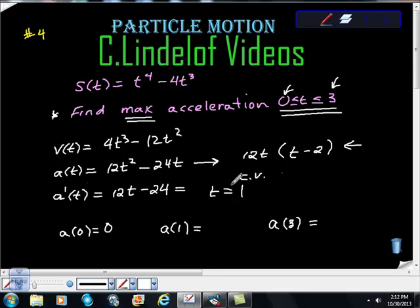At 1 makes this 12 and this negative 1, so it gives us negative 12. So acceleration at 1 is negative 12. That's certainly not a max compared even to the 0.